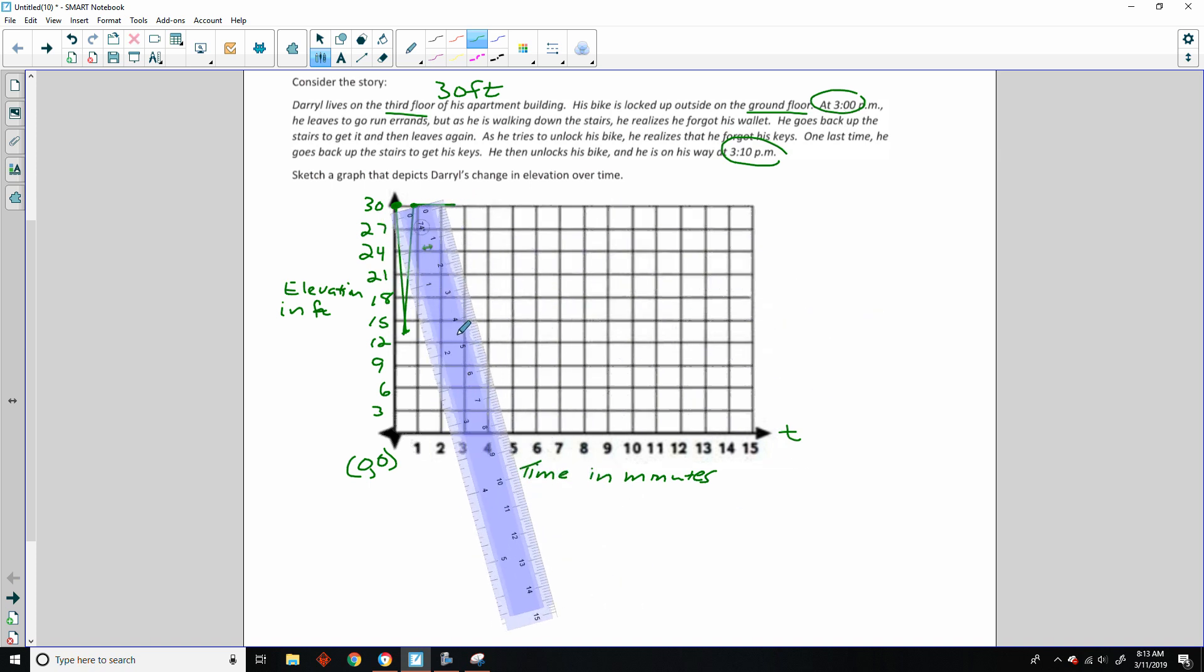Okay, so he might be in his apartment for a minute looking for his keys. So his elevation over time is not going to change. If he is up in his apartment, let's just say it took him a couple of minutes or so to find his keys. So his elevation didn't change over a certain period of time. He was in his apartment. Then he finds his keys and he leaves again. And this time he's going down the stairs. And again, it's not going to take a full minute to walk downstairs. But this time, it says that he goes all the way downstairs to unlock his bike. So now he's on the ground floor. He's on the ground.